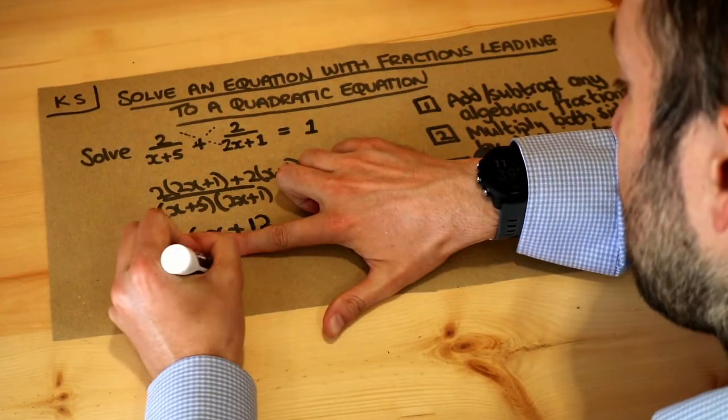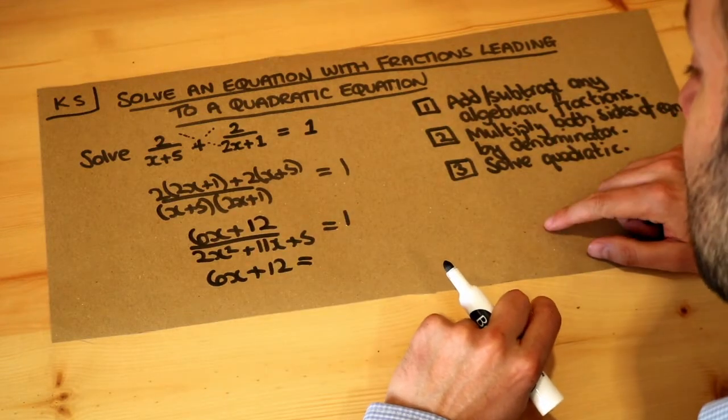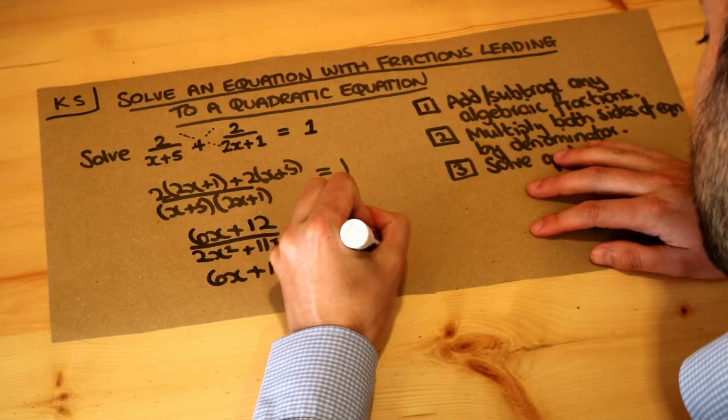That just gets rid of the 'over 2x² + 11x + 5' and you get the 6x + 12. If you multiply the 1 by (2x² + 11x + 5), well 1 times anything is itself, so you get 2x² + 11x + 5.